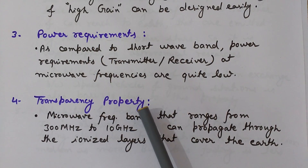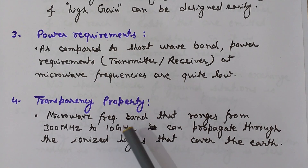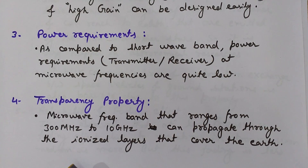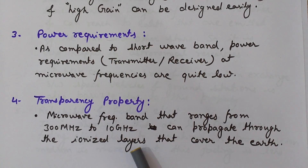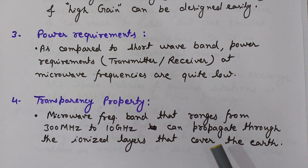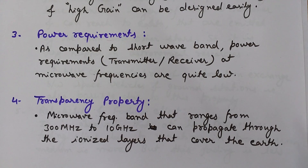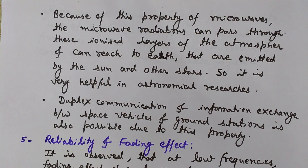The transparency property is also an important property of microwaves. There is an ionosphere above our earth, and the microwave frequency band that lies in 300 megahertz to 10 gigahertz can propagate through this ionized layer that covers our earth. Because of this, microwave radiations can easily pass through the ionized layers of the atmosphere.